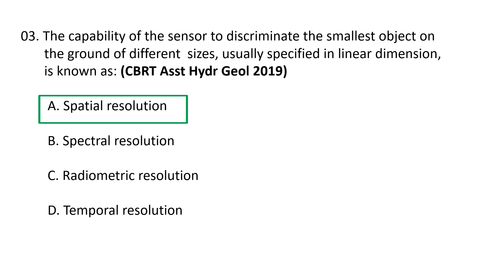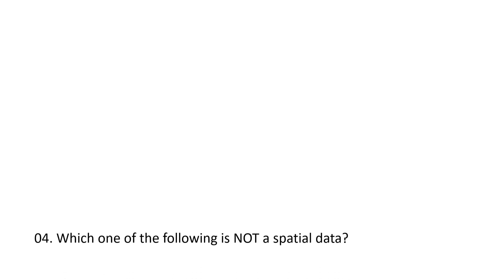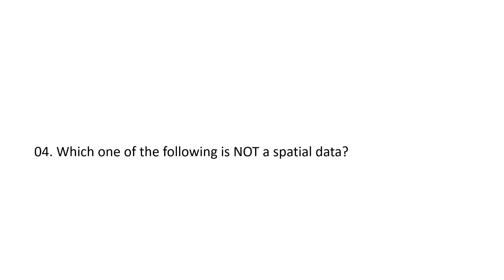Spatial resolution refers to the size of the smallest feature that can be detected by a satellite sensor or displayed in a satellite image. It is usually presented as a single value representing the length of one side of a square. The capability of the sensor to discriminate the smallest object on the ground in a linear dimension is known as spatial resolution. A is the correct option.